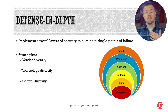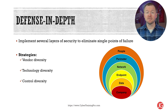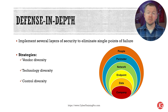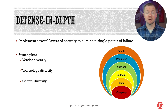Defense in depth, or layered security, is the strategy of implementing several layers of security so that if one fails, there's another to help prevent successful attacks. There are three main strategies: vendor diversity, meaning you should have multiple vendors for your security controls — for example, three firewalls shouldn't all be made by Cisco; technology diversity, meaning you implement different technologies like a surveillance system for video/audio and proximity readers for badge access; and control diversity, meaning you have different control types consisting of technical, physical, and administrative controls.